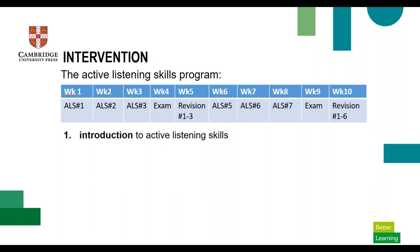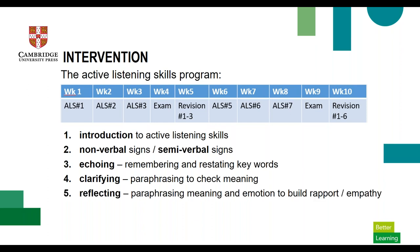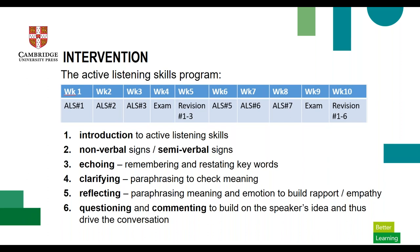In the first week, we established the concept and set the expectation of being present to the speaker. We followed with nonverbal signs — smiling, nodding, eye contact, leaning in, mirroring body language — and semi-verbal signs, specifically back-channeling: 'aha,' 'mm,' 'yep.' After that, the more challenging verbal signs. Firstly, echoing — restating key words of the speaker. Paraphrasing to clarify meaning, then reflecting, which also involves paraphrasing but to mirror meaning and so demonstrate understanding. Lastly, questioning and commenting to build on the speaker's idea and drive the conversation.